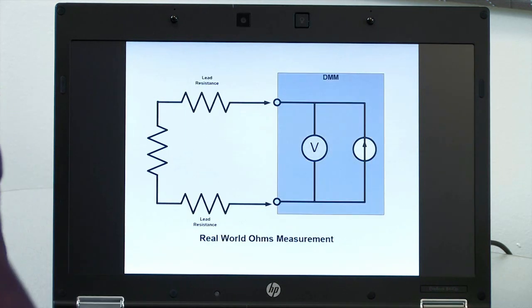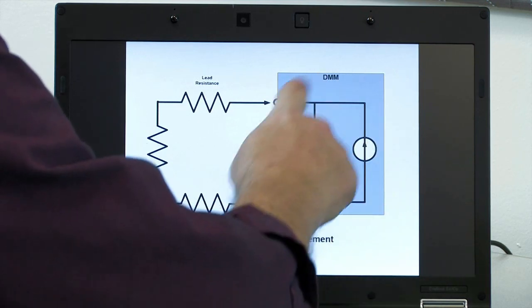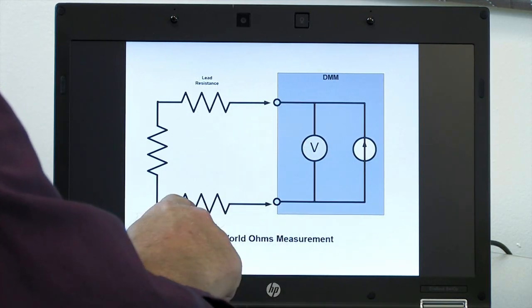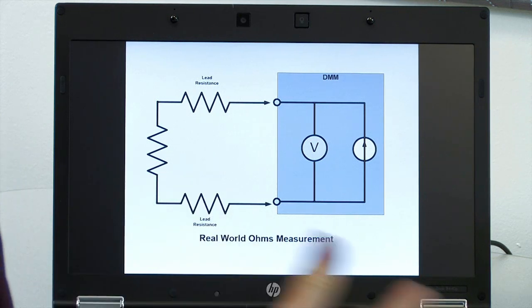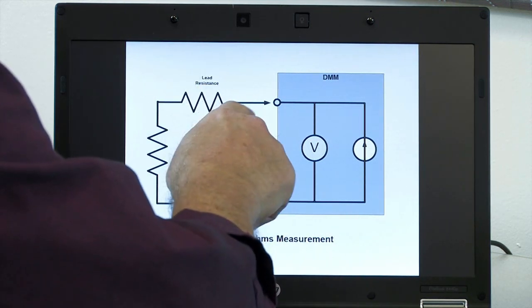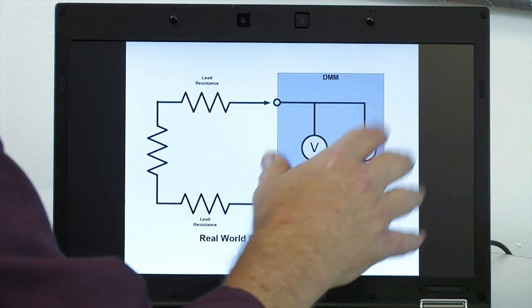Now in the real world, the problem we get is you still have the multimeter over here but you have lead resistance because you're connecting to your unknown resistor through some test leads. This may be through an automated test system and these leads may go through relay connections and all kinds of things.